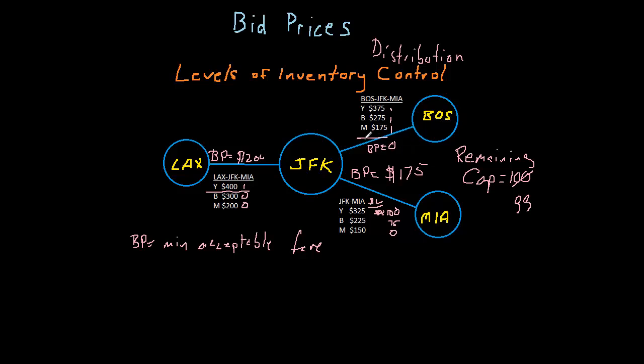For example, the bid price in this leg is zero. So if I take this customer, this $375 customer, and sell both of these seats to that customer, then we could reasonably say that the incremental value to the network is $375.